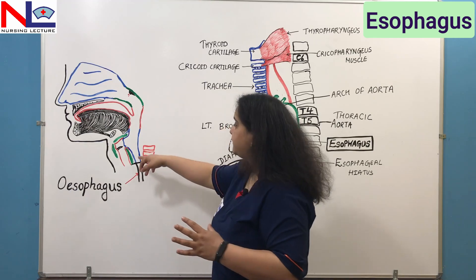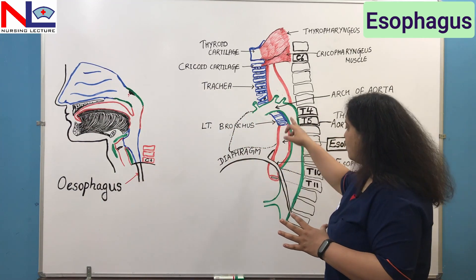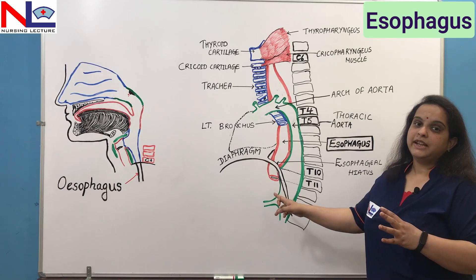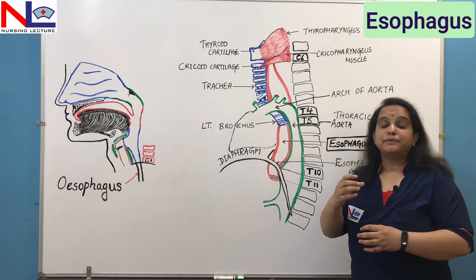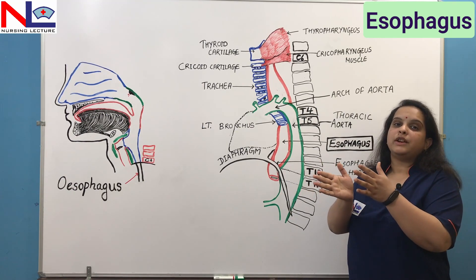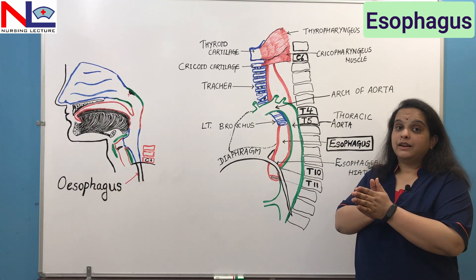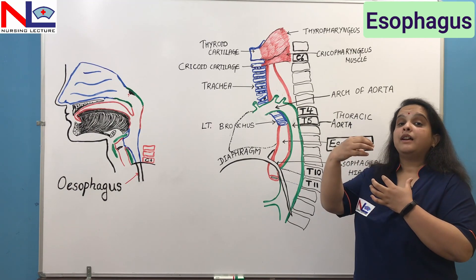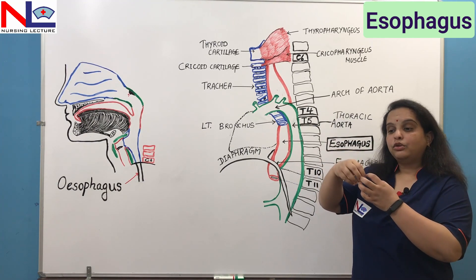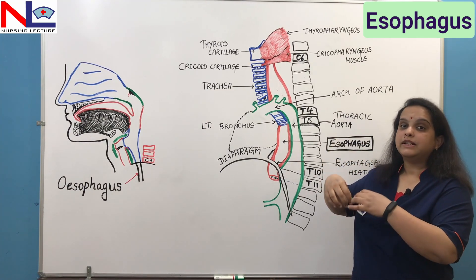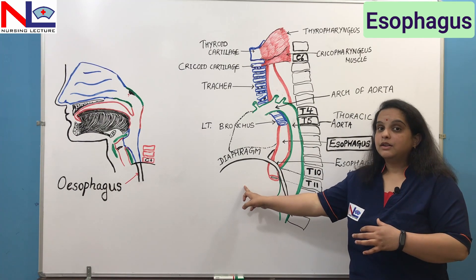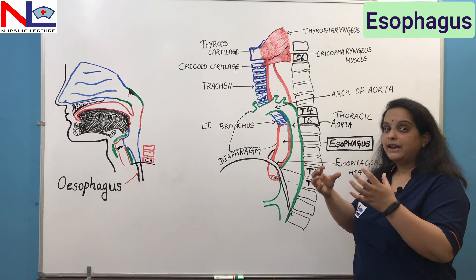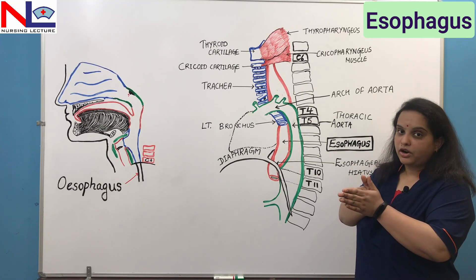So the esophagus extends from the lower part of the laryngopharynx down to the upper part of the abdominal cavity, where it attaches to the cardiac part of the stomach. It is a collapsed structure because its anterior and posterior walls oppose each other. When food is ingested and reaches the pharynx, the esophagus opens to allow the food bolus to descend into the stomach, and when no food is passing, it remains collapsed.